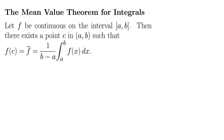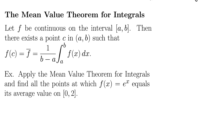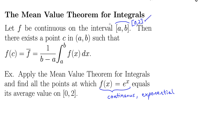Let's try an example. Apply the mean value theorem for integrals and find all the points at which f of x equals e to the x equals its average value on 0 to 2. First, we note that e to the x is continuous because all exponential functions are continuous. It's important to note that it's continuous as part of these exercises — if you don't say something about it being continuous, even if it's obvious, you technically can't apply the theorem. E to the x is continuous everywhere, but definitely continuous on this closed interval from 0 to 2.